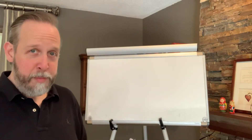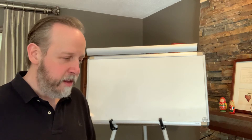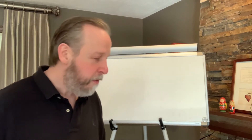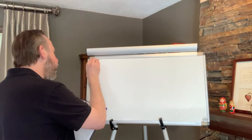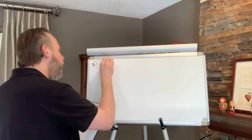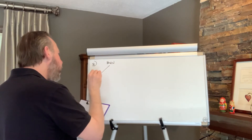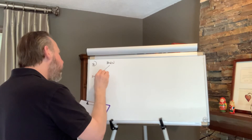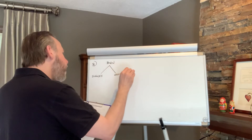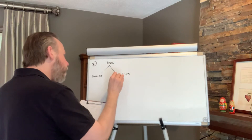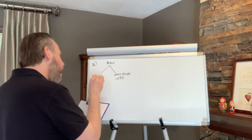Number three started off by talking about single births versus multiple births and the proportion of people who are left-handed from both of those sets. I'm going to start by making a little tree diagram to help keep things organized. People are born and they're either singles, like most of us, or they're multiples. We were given the proportion who are multiples: it's 0.035, making single births 0.965.